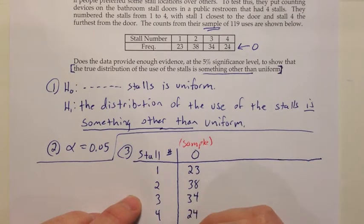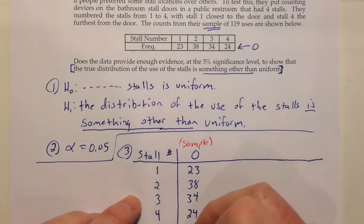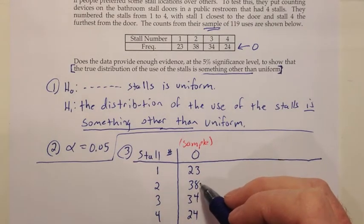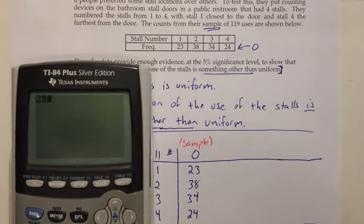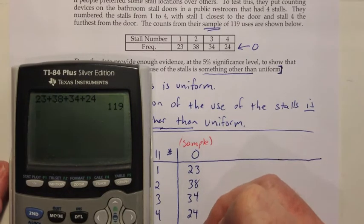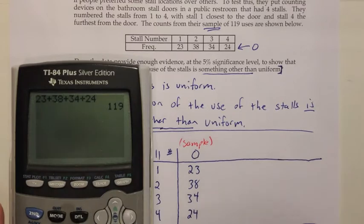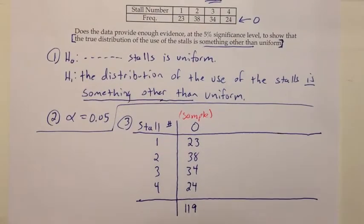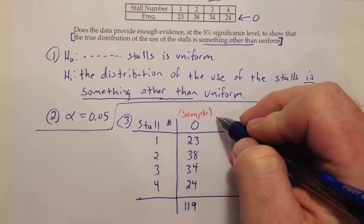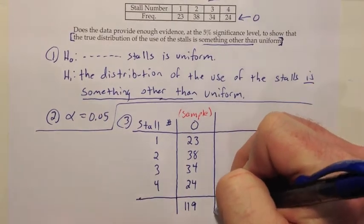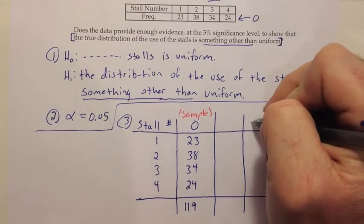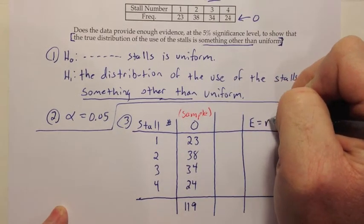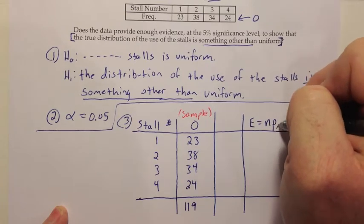One of the things that I would also suggest when you're filling out the table and you get your values of O, is that you add them up real quick on the calculator and just make sure you get the 119. So I'll do that real quick: 23 plus 38 plus 34 plus 24 gives me the 119 that it's supposed to, just to make sure everything's adding up to the sample size they said I was going to get. And then I want to go on to E.